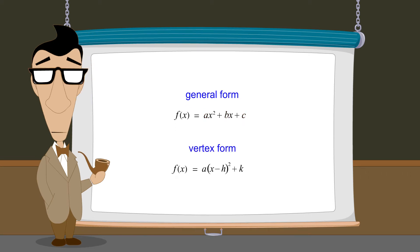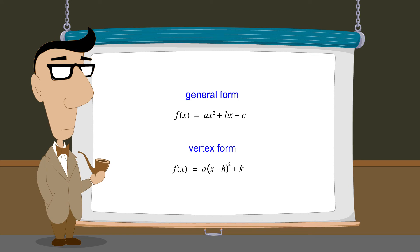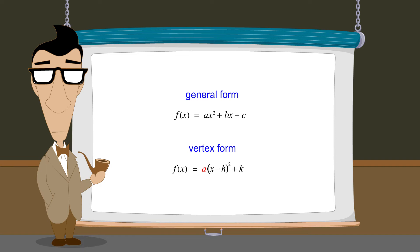In vertex form, quadratic functions are written as a times (x minus h) squared plus k. Just like in general form, a determines the width and orientation of the parabola, but unlike general form, h and k are the horizontal and vertical coordinates of the parabola's vertex.